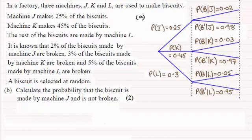Okay welcome back then if you had a go. So for this one, if I wrote it in symbols, it'll be the probability that it came from machine J and it's not broken. So that's B prime.